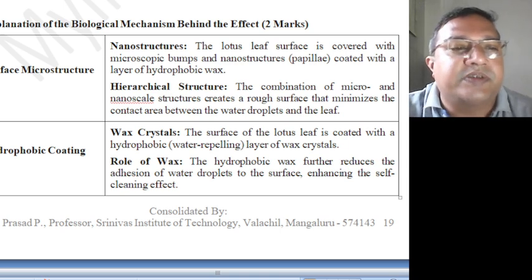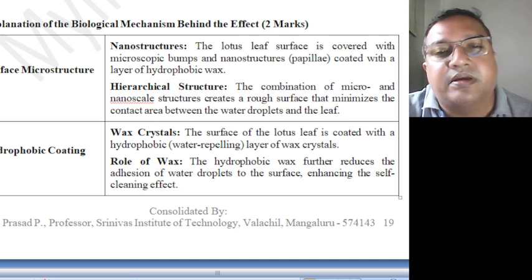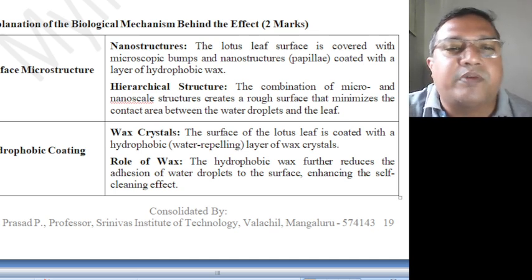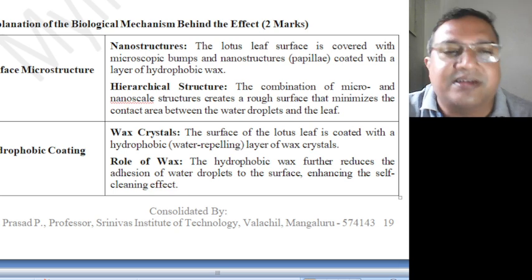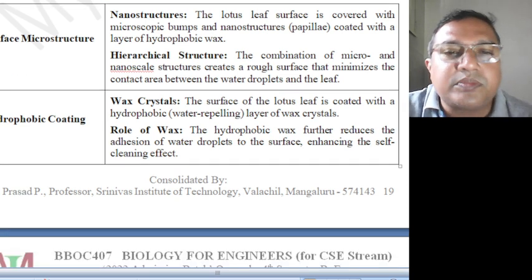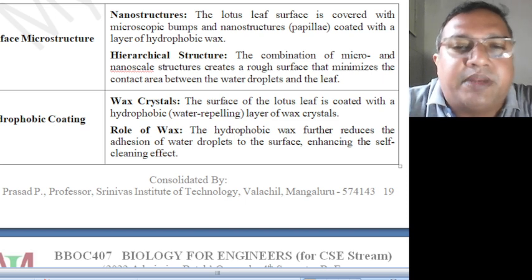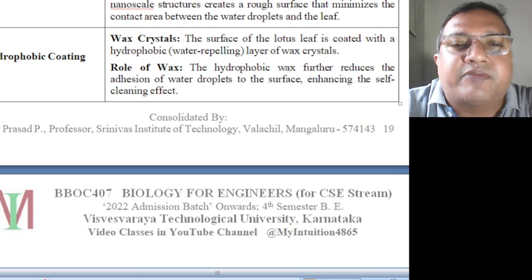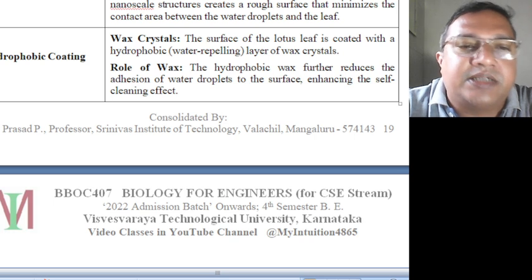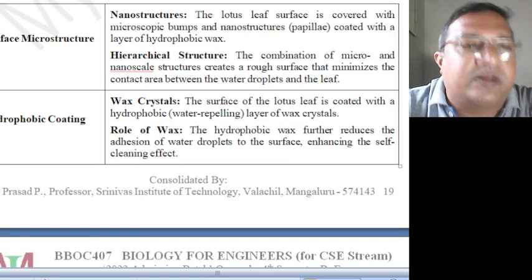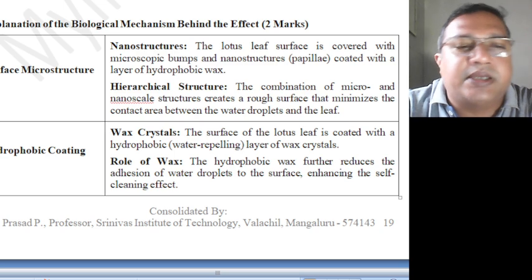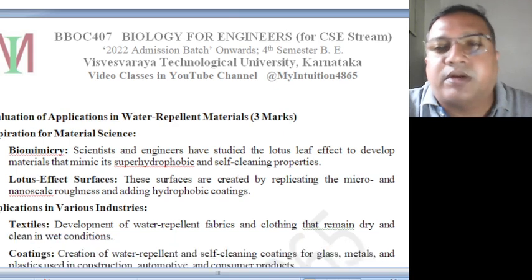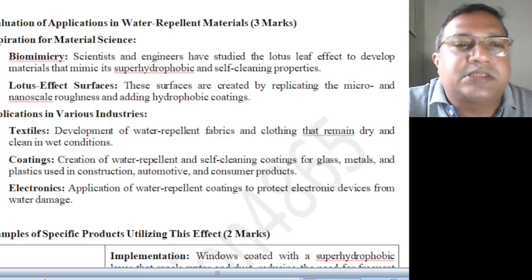The biological mechanism behind the effect carries 3 marks. The lotus leaf surface is covered with microscopic bumps and nanostructures called papillae, coated with a layer of hydrophobic wax — a deadly combination. This hierarchical structure combines micro and nanoscale features to create a rough surface that minimizes the contact area between water droplets and the leaf. The hydrophobic wax crystals further reduce adhesion of water droplets to the surface, enhancing the self-cleaning effect.